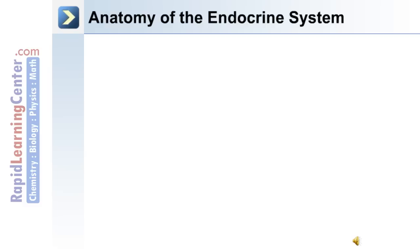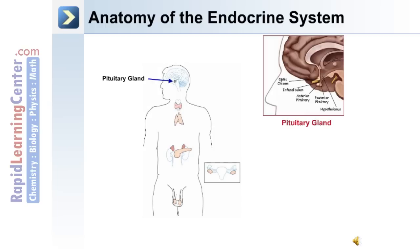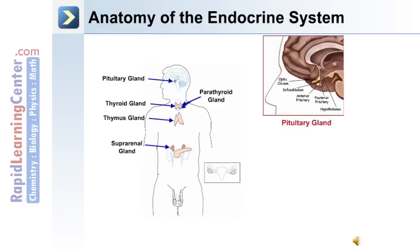The major organs and glands of the endocrine system include: the pituitary gland, made up of the anterior and posterior lobe; the thyroid gland; on the thyroid gland are two parathyroid glands; in the chest is the thymus gland; on top of each kidney is the suprarenal gland; and the pancreas and the gonads, which are the testes in the male and the ovaries in the female.